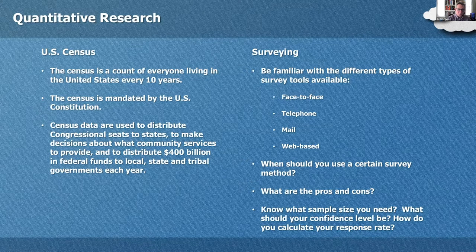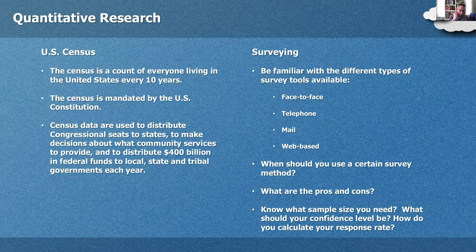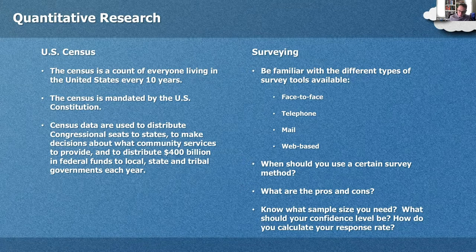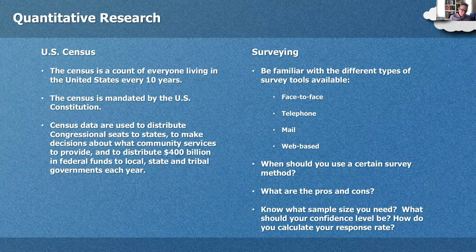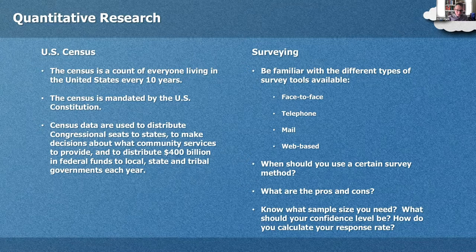Be familiar with the different types of survey tools: face-to-face surveys, telephone surveys, mail surveys, and web-based surveys. A shopper intercept survey is a face-to-face survey. Know when you should use a certain survey method — as a planner, given the group you need to collect information from, you need to know which survey method is best and understand the pros and cons of each. As for sample size, you won't need to do a full statistical analysis, but know what sample size is needed to make assumptions about a population at a given confidence level and how to calculate a response rate.